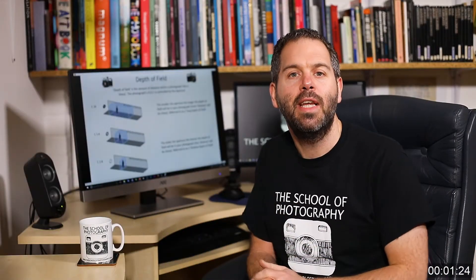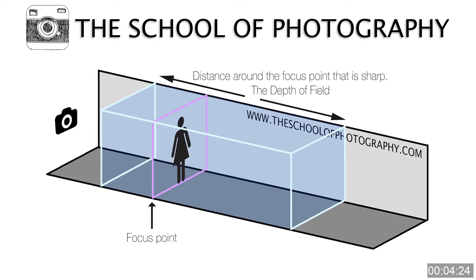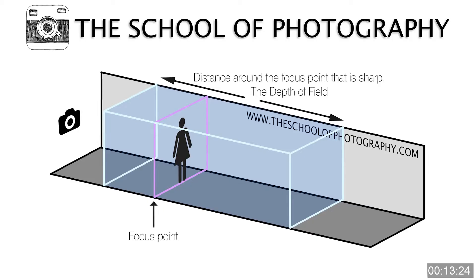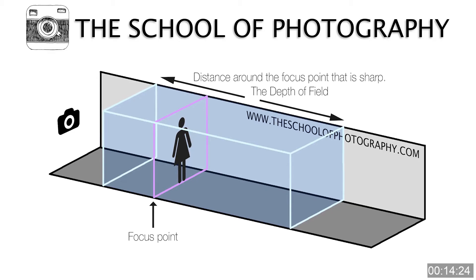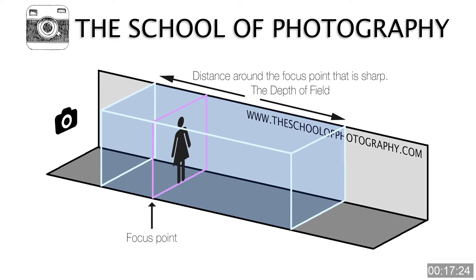Depth of field in photography is the distance that is sharp around your focus point. It is not what's in focus — your focus point is always in focus. It's the distance in front and behind it that is sharp. That is your depth of field.